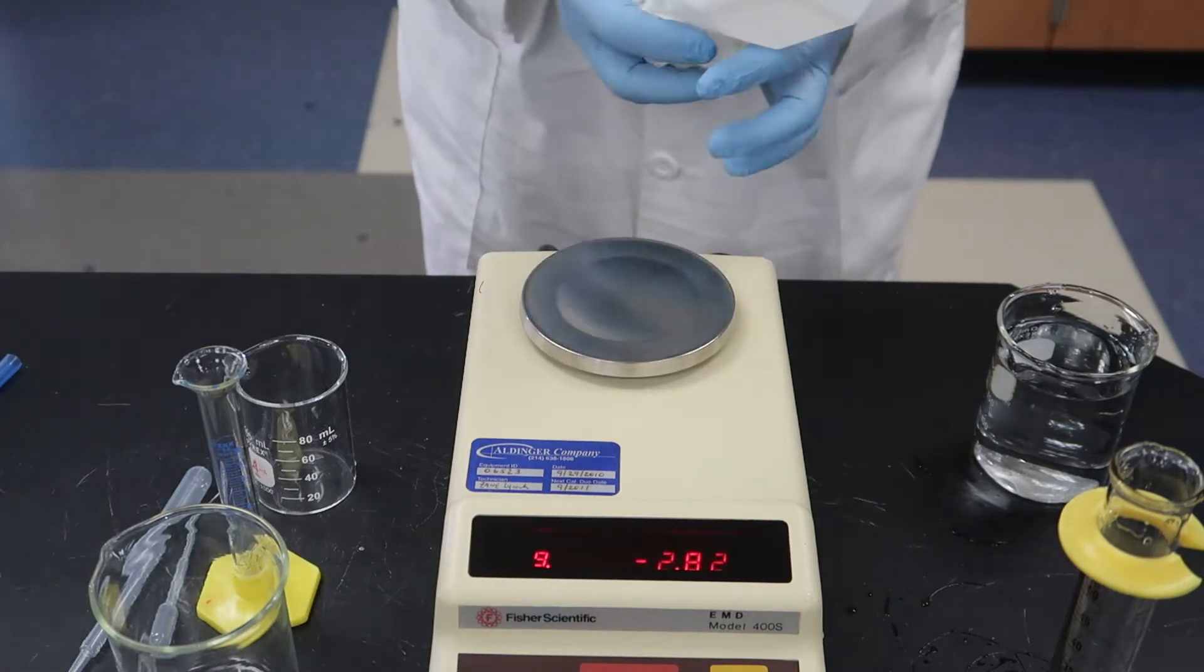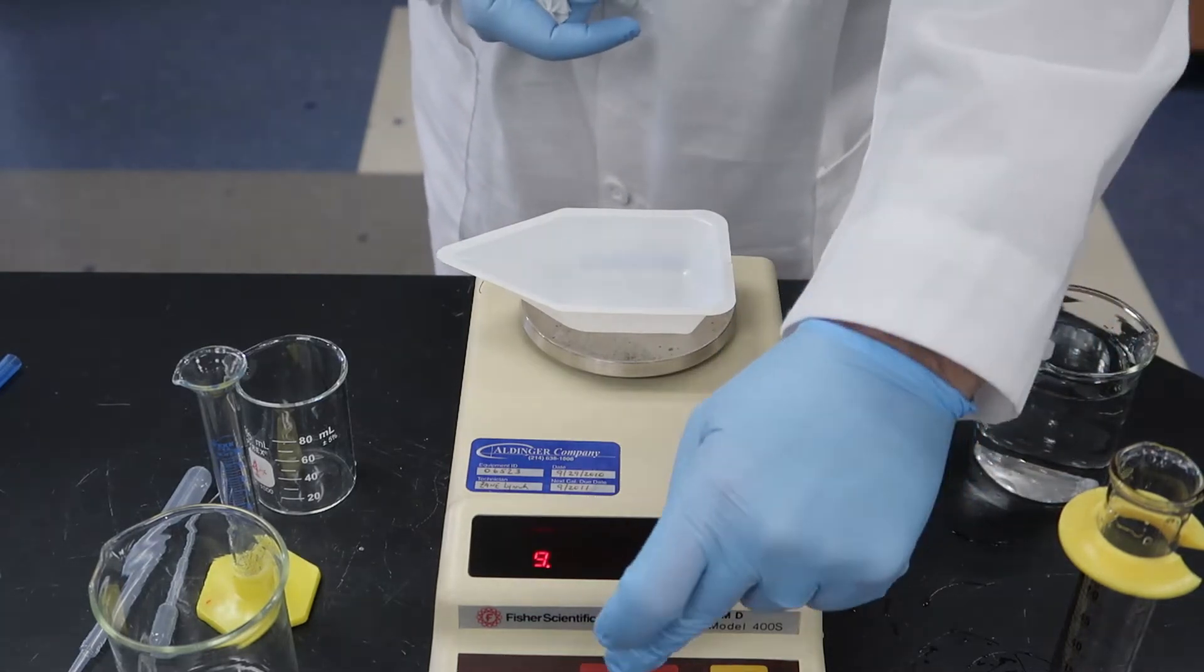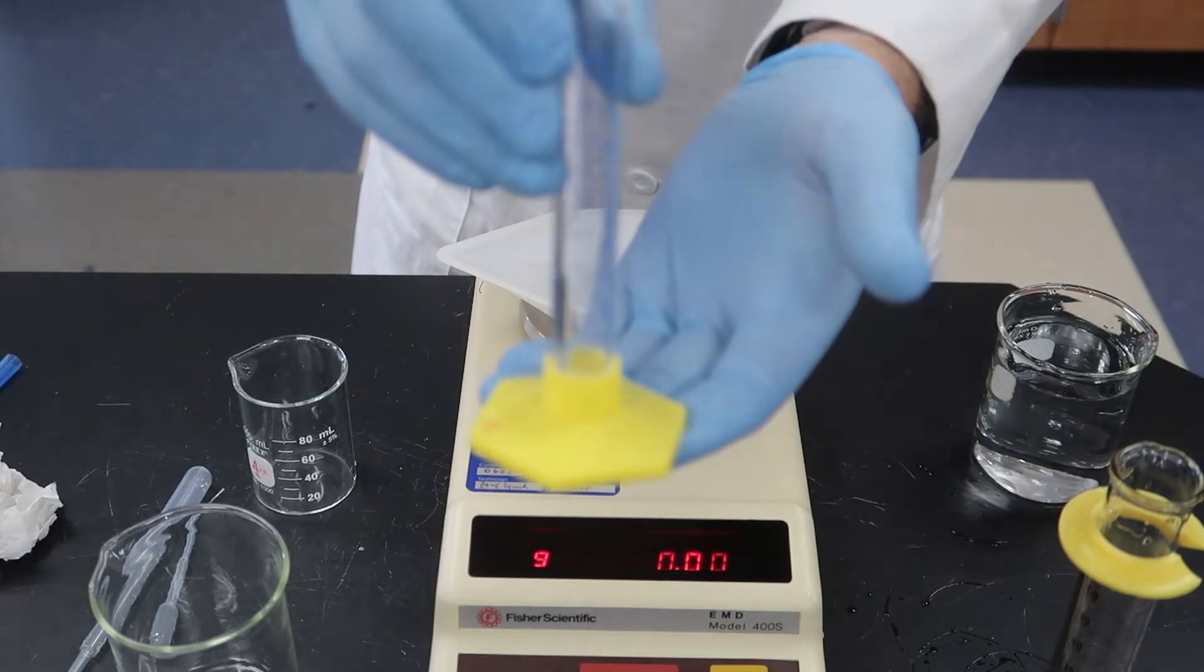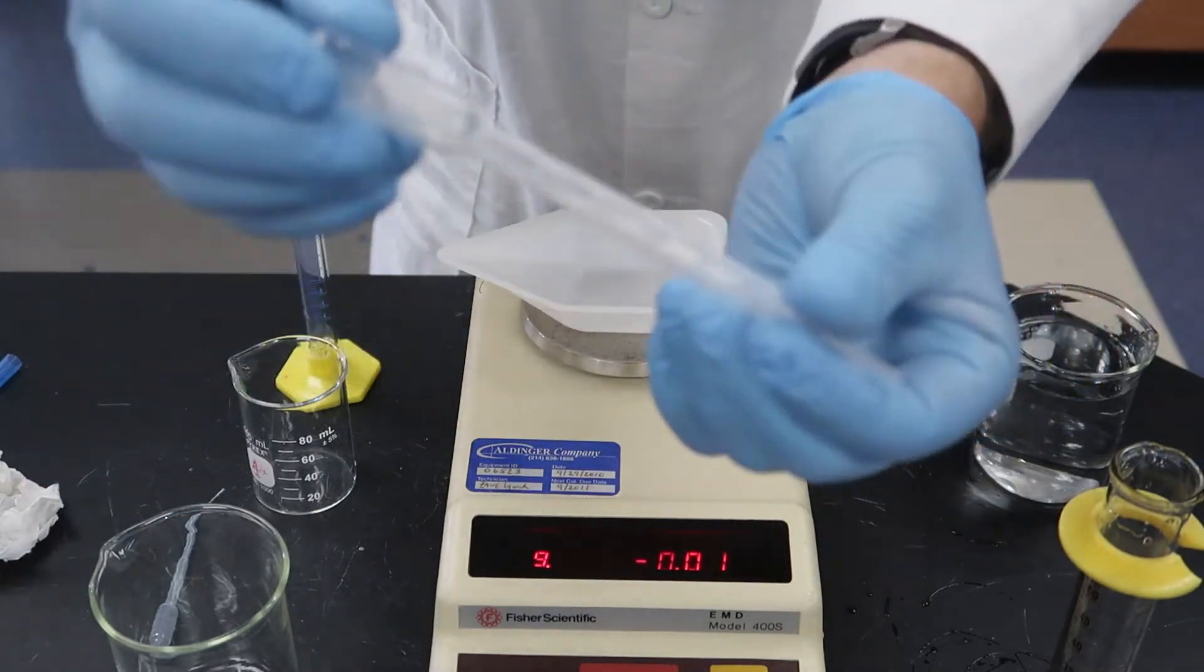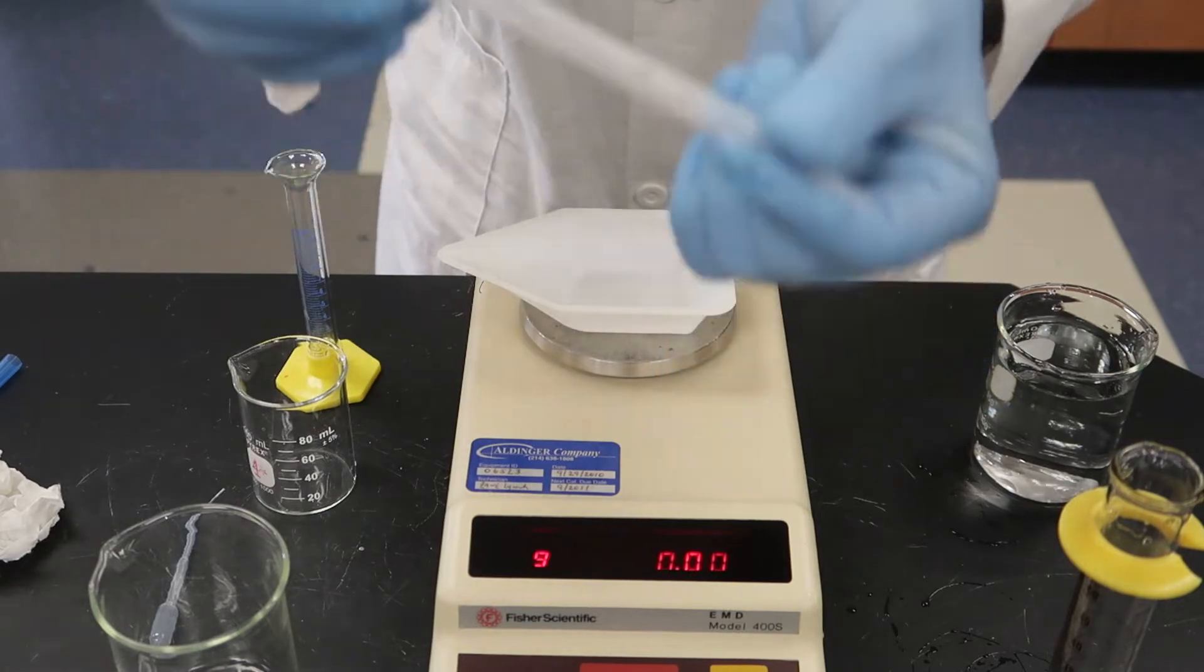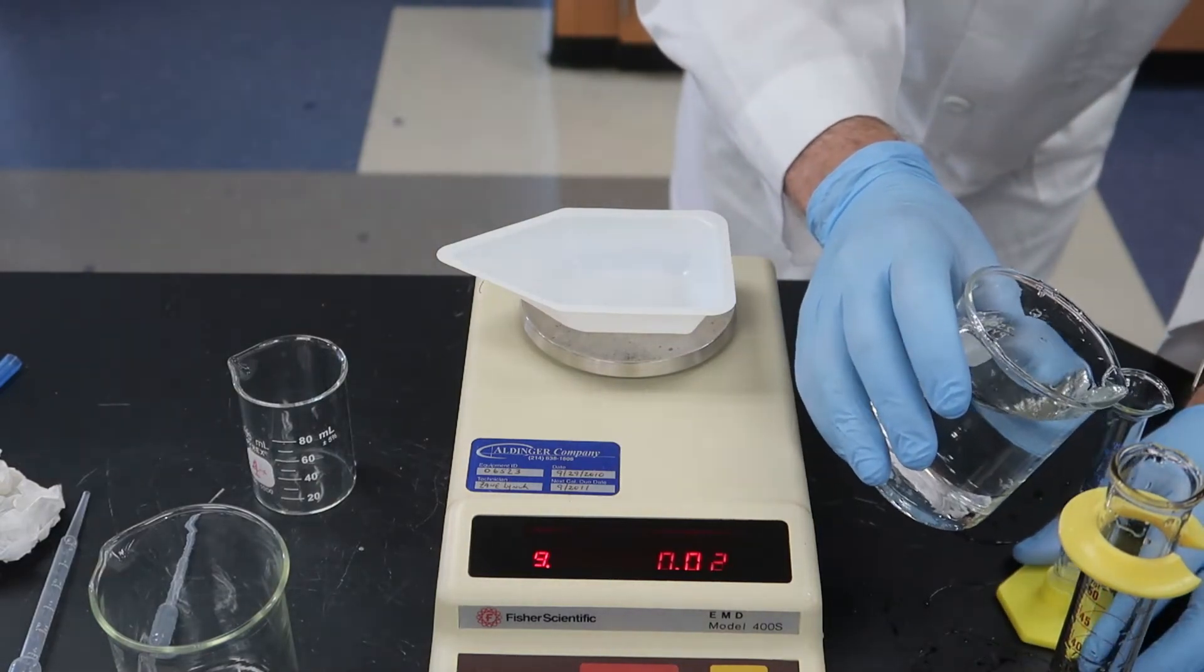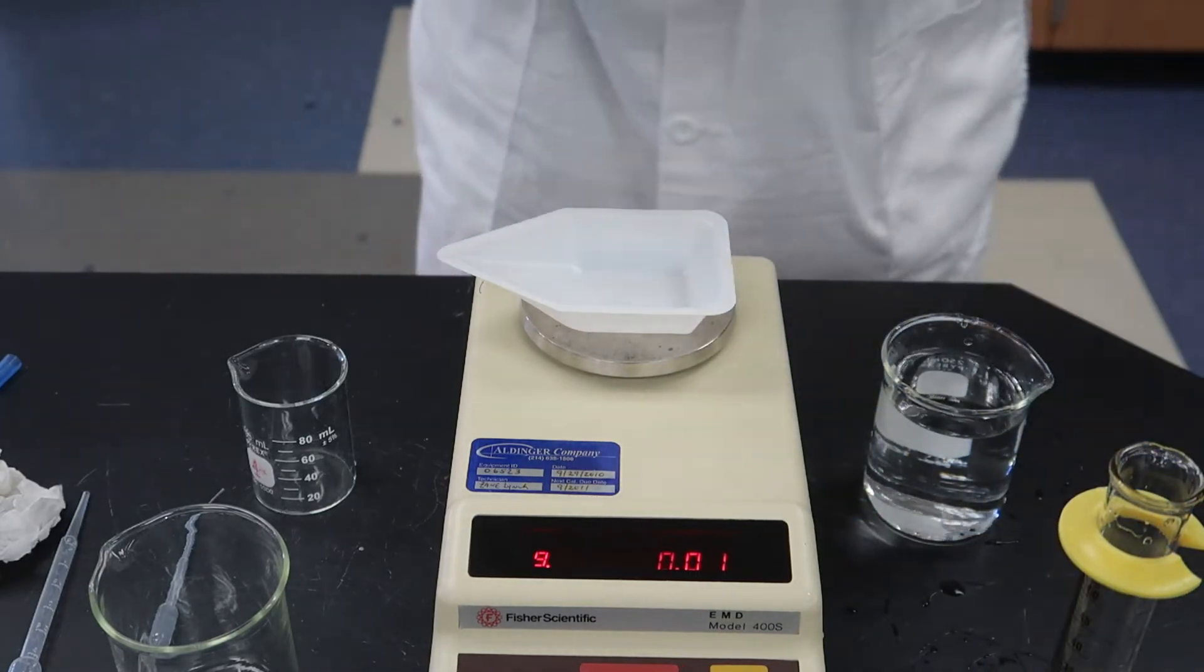Okay, the next volume that we want to measure is 2 milliliters. Again, we have to decide what piece of equipment to use. We could use a graduated cylinder. This graduated cylinder is marked in tenths of a milliliter. We could also use the graduated disposable transfer pipette. It's blurry so you can't really see the numbers on there, but it is marked in half milliliter increments up to 3 milliliters. But let's go with the graduated cylinder. I think that would be a better choice.